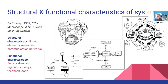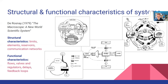Going back to the systems literature of various flavours, there are lots of attempts to characterise and describe systems at different levels in common terms. One early and quite general way to do this was described by De Rosny in the 70s. He talks about systems in terms of structural characteristics and functional characteristics, and these methods have been improved upon somewhat since then.